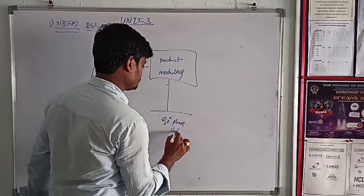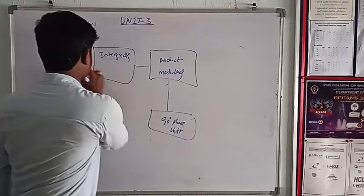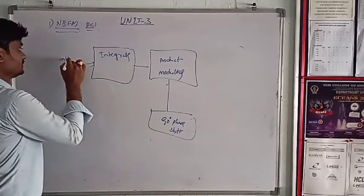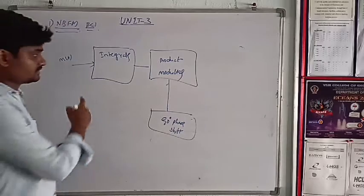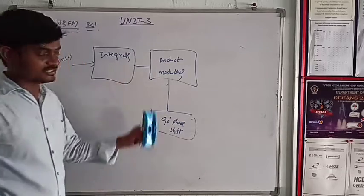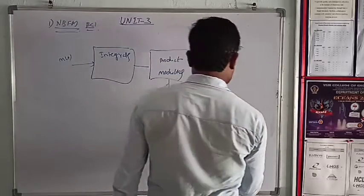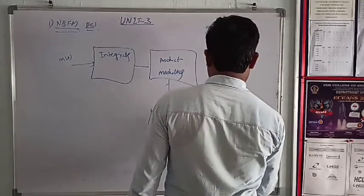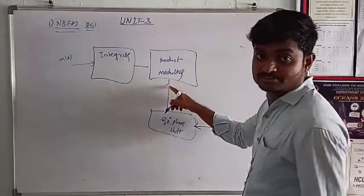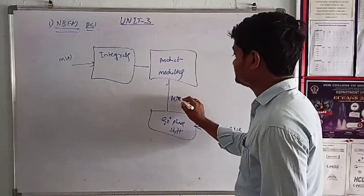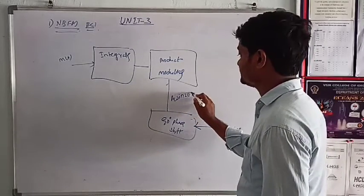This is your message signal M of t. Then we have an integrator system, next the product modulator with 90 degrees phase shift. The carrier signal is AC sin 2 pi FC t.